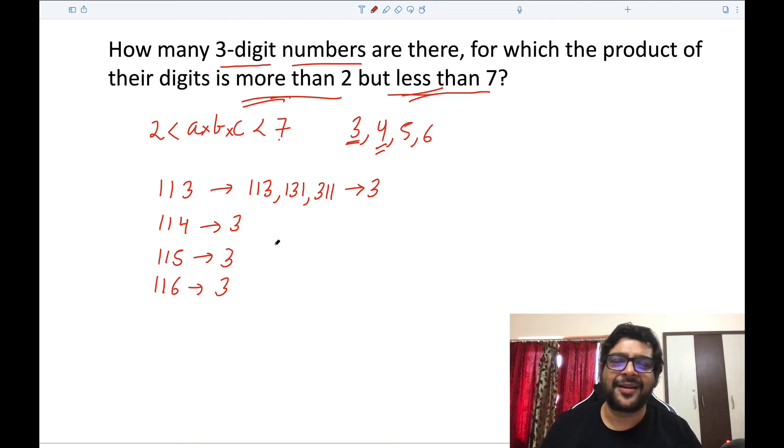So these will be 3, 3, 3, 3, or a total of twelve ways. Now some people might think that twelve is the answer and they will be wrong. That is why questions like this where the final answer is not given—no option—people make mistakes. Think about it: can you generate three any other way other than one times one times three? You can't. But can you generate four? Yes you can.